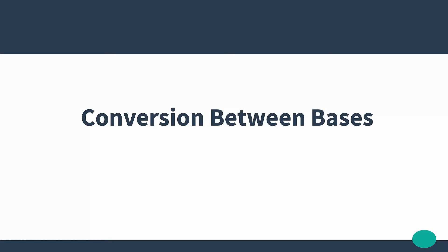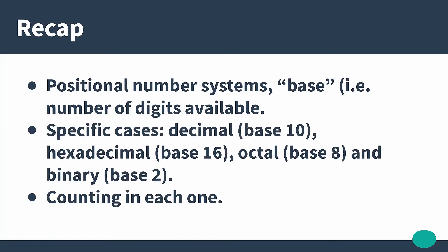In this video we'll talk about converting between different number bases. In previous videos we covered the concept of positional number systems and the number base — that is the number of digits available to represent numbers. We looked at some specific cases: decimal or base 10, hexadecimal or base 16, octal or base 8, and binary or base 2. We also worked through some examples of counting in each base.